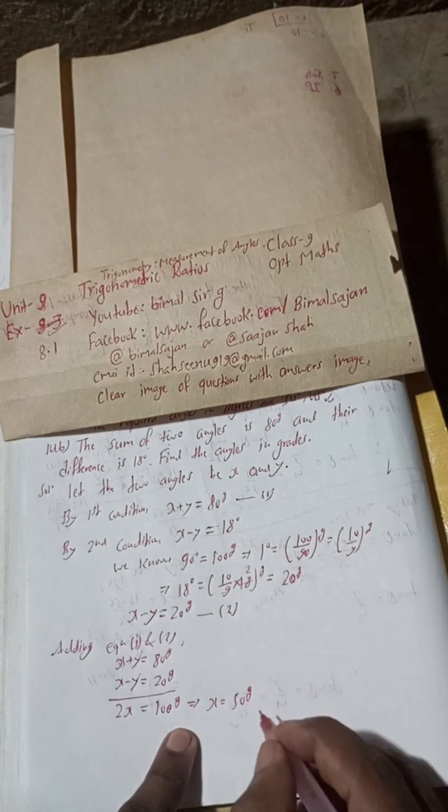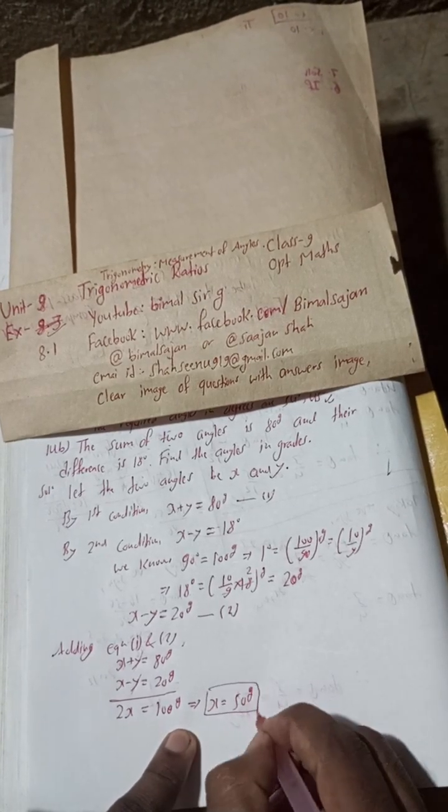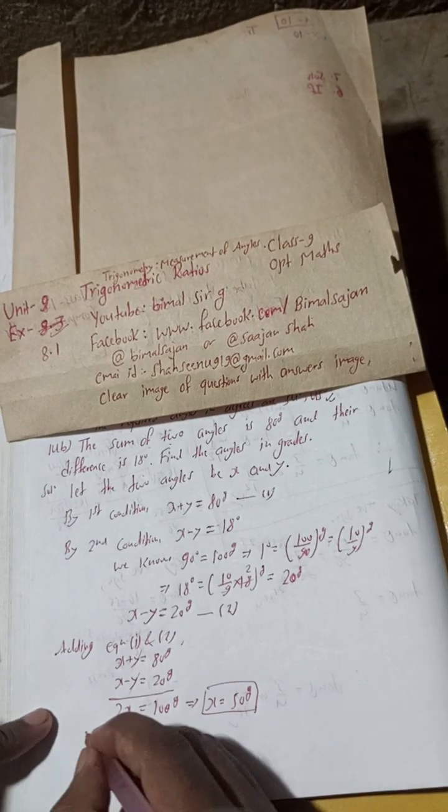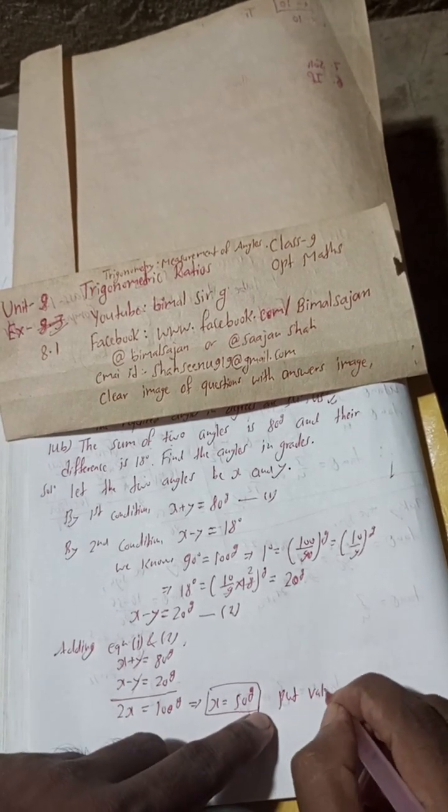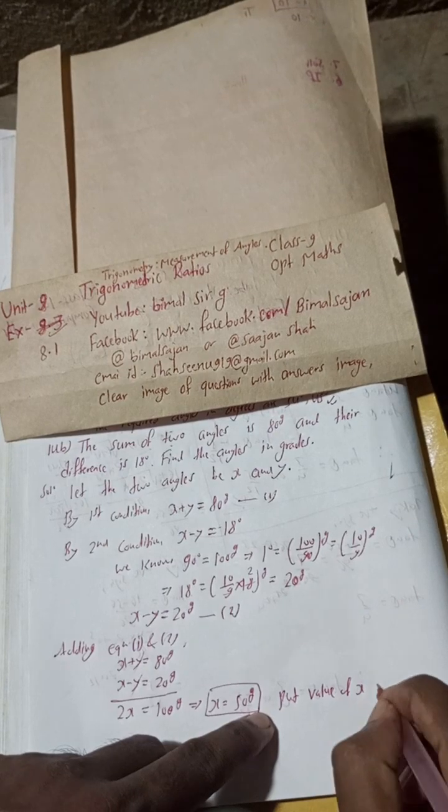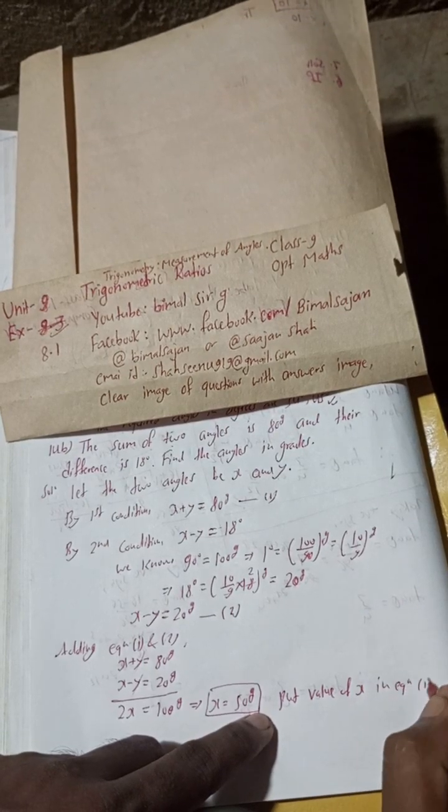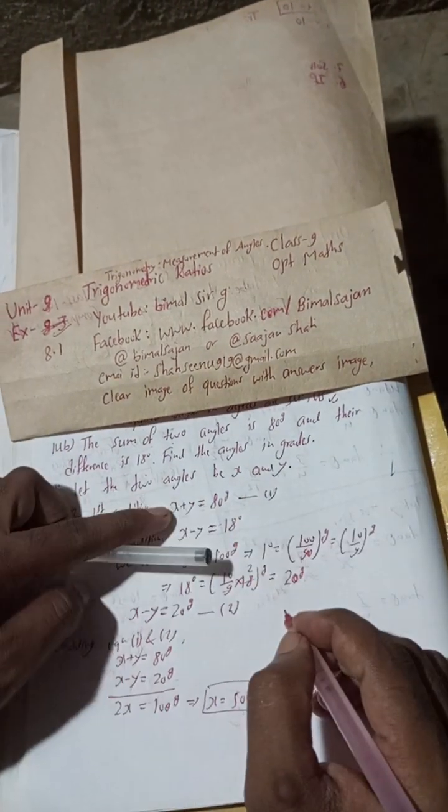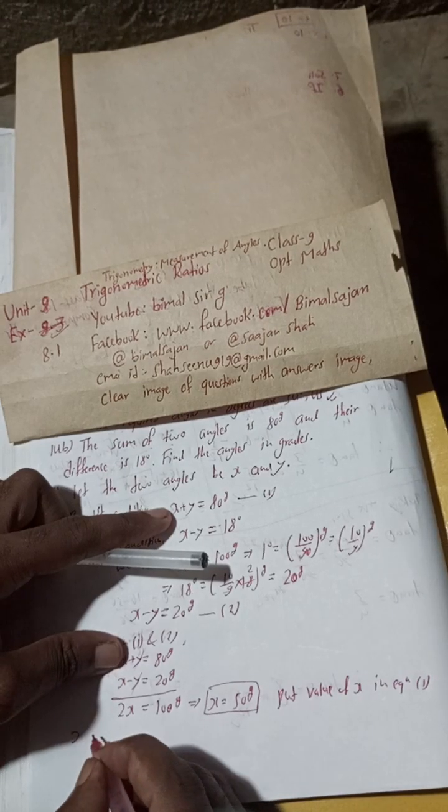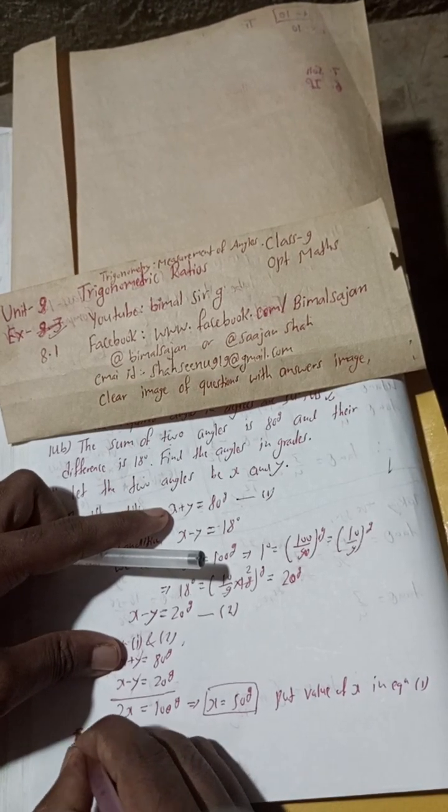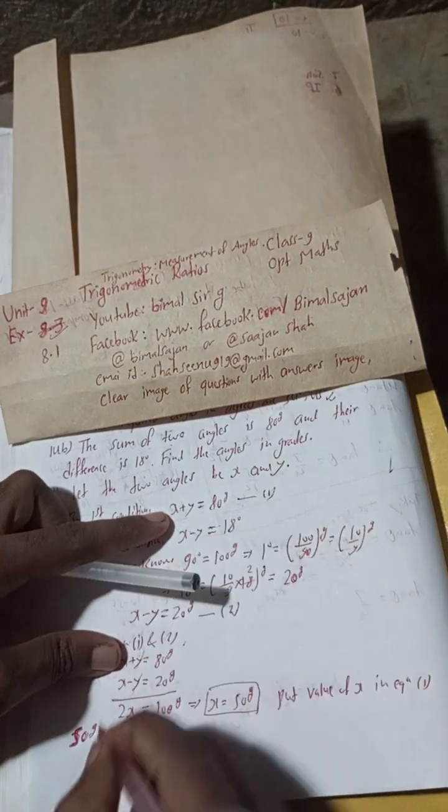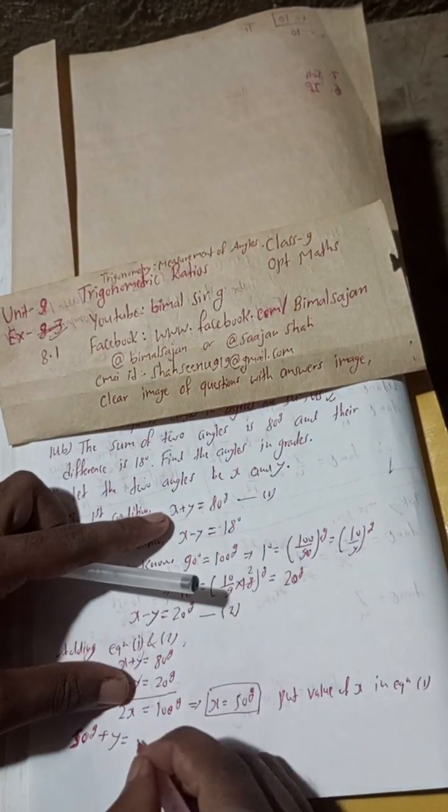Now put the value of x in equation 1. Put x equals 50 grade, so 50 grade plus y equals 80 grade.